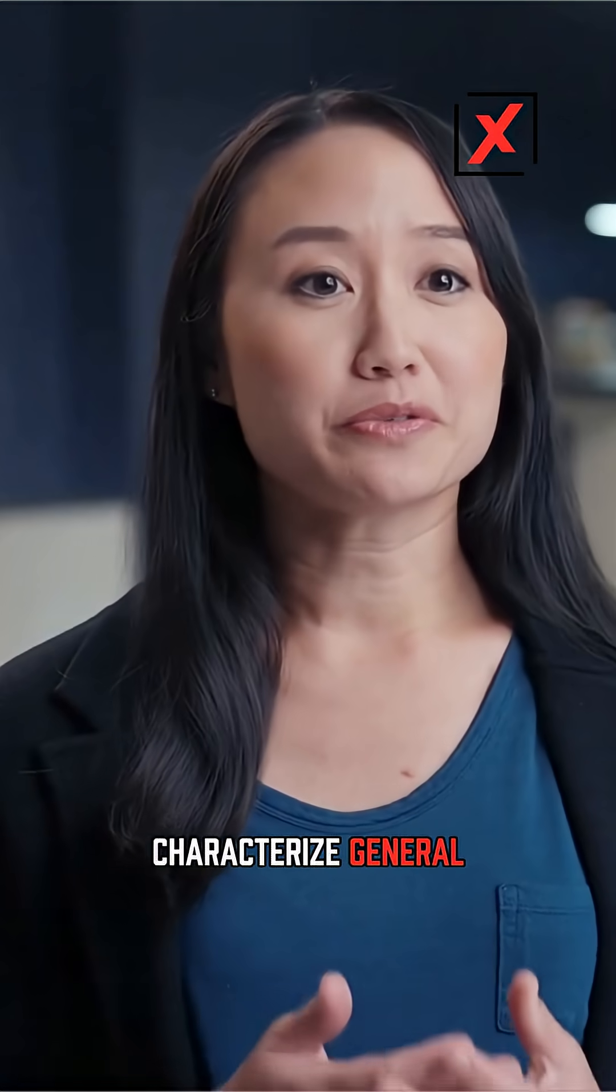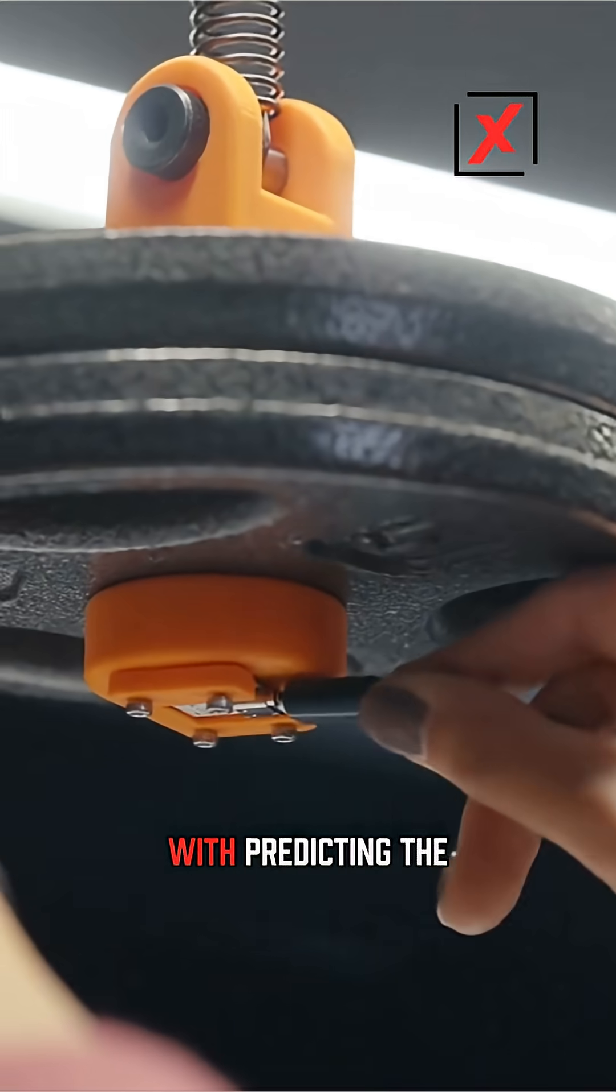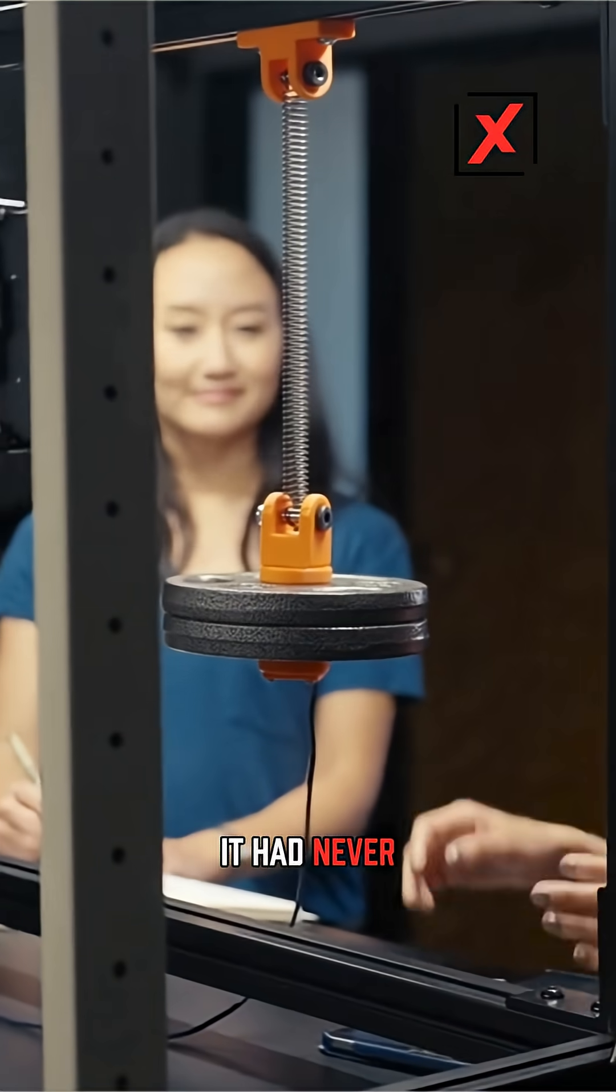To test if Newton had learned to characterize general physical behavior, we tasked it with predicting the behavior of systems it had never seen before.